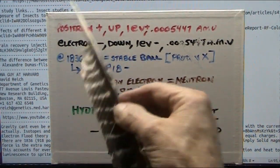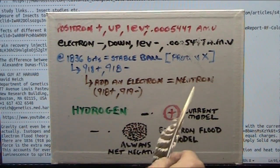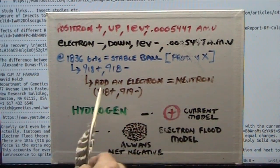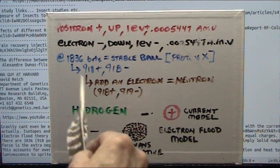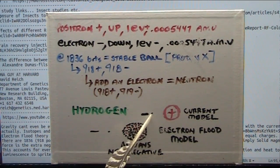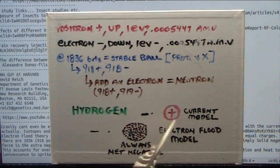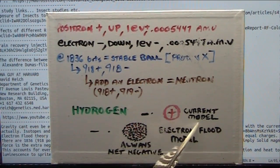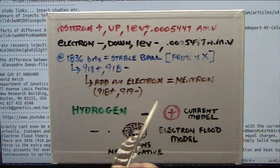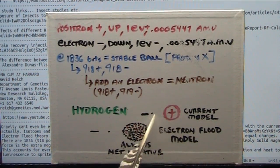When you go into the neutron, you just add one extra negative — that's all for the neutron, so it's 918 positive and 919 negative. Hydrogen is that little tiny bitty particle right there and it's negative. And this gigantic positive over here — this is the current model. So hydrogen would be this gigantic positive and this little tiny electron.